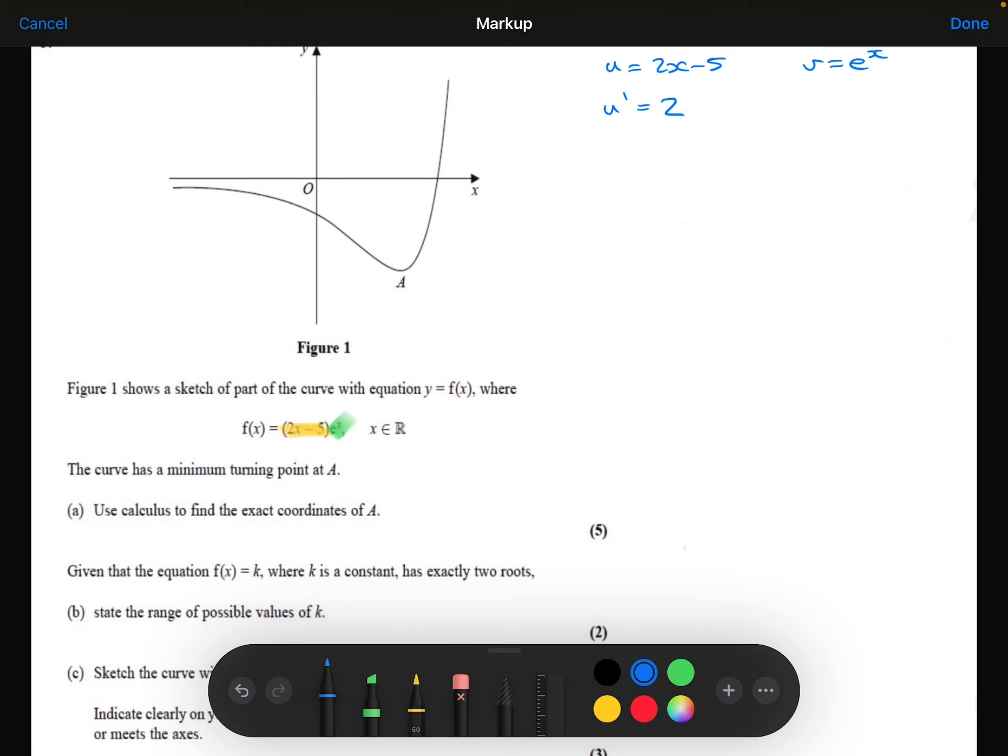Differentiating 2x minus 5, I get 2. Differentiating e to the power x, I get e to the power x.